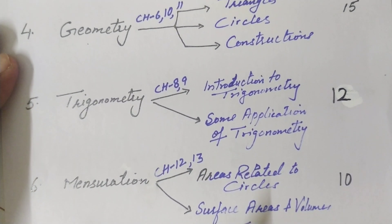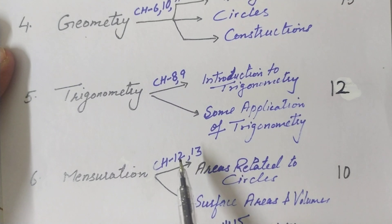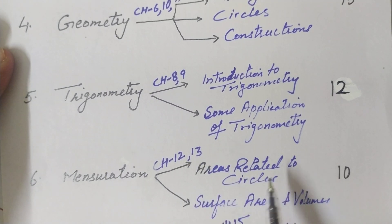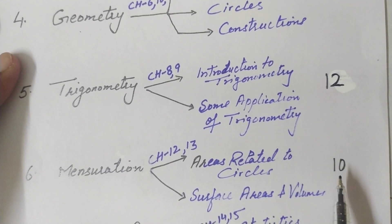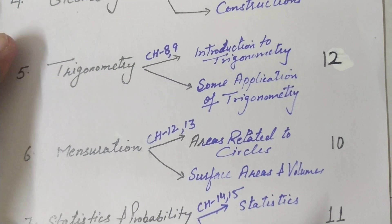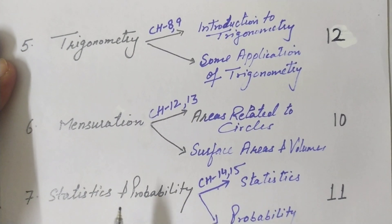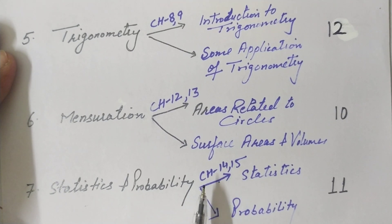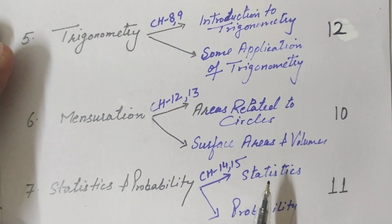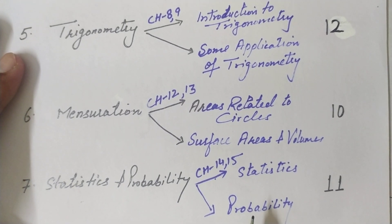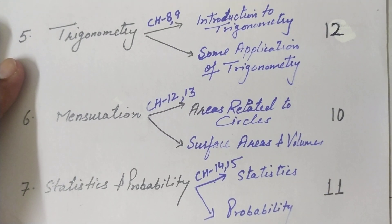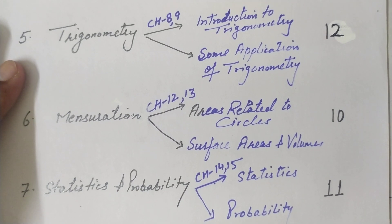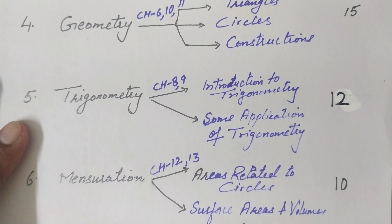Unit 6 is Mensuration — Chapter 12 (Areas Related to Circles) and Chapter 13 (Surface Areas and Volumes) — worth 10 marks. Unit 7 is Statistics and Probability — Chapter 14 (Statistics) and Chapter 15 (Probability) — worth 11 marks. All units together add up to 80 marks — that is the complete blueprint for the 2020-21 session.